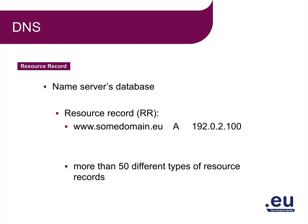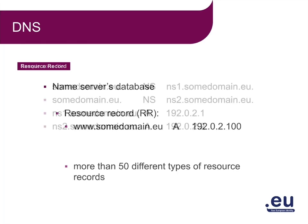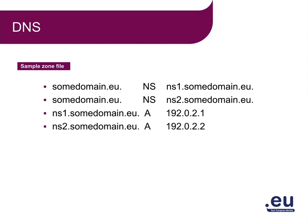DNS has more than 50 different types of resource records. A resource record type which is also quite important in our course is the NS resource record type. NS stands for Nameserver. The NS resource record for somdomainname.eu gives the nameservers for this domain name: ns1.somdomainname.eu and ns2.somdomainname.eu. In our DNS database, we can ask for the IP addresses — the A resource record type — for these two nameservers. Each nameserver must have an IP address. All the information of a specific domain name in the database is called the zone file.